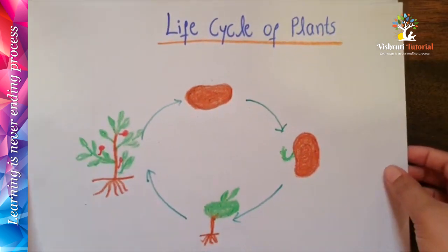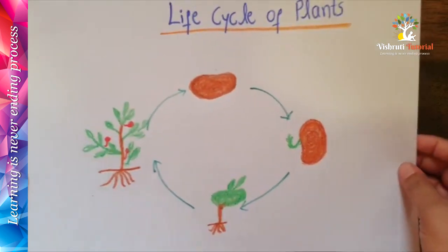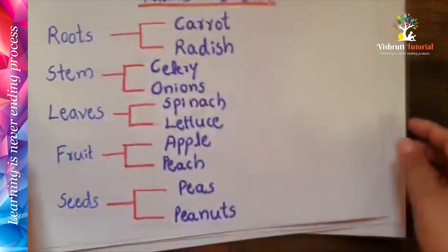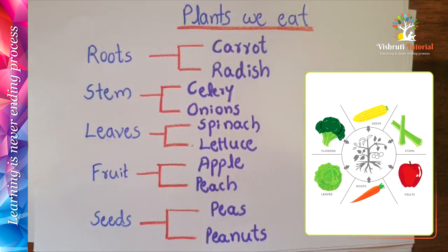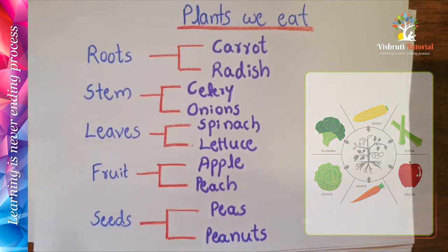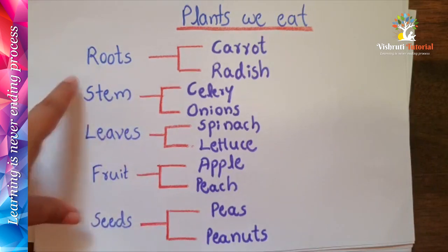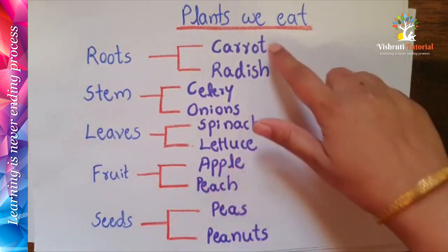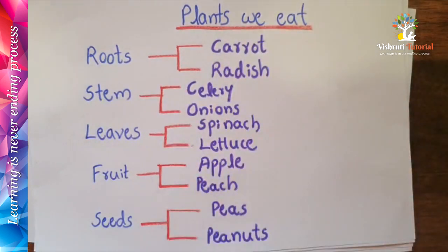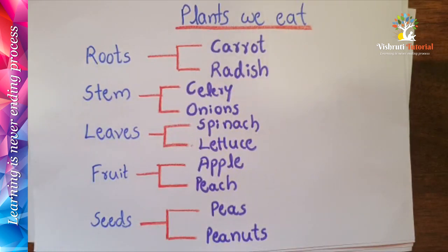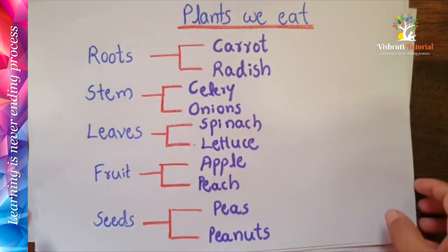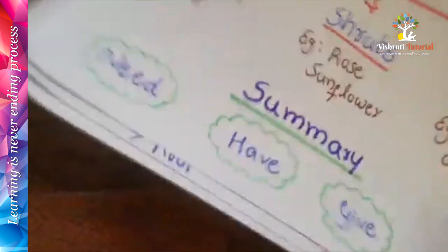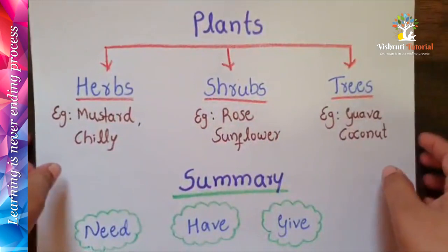This is the life cycle of the plants. Next, let's look at plants we eat. We eat the whole plant! From the root we eat carrot and radish. From the stem we eat celery and onions. From the leaves we eat spinach and lettuce. From the fruit we eat apple and peach. From the seeds we eat green peas and peanuts.